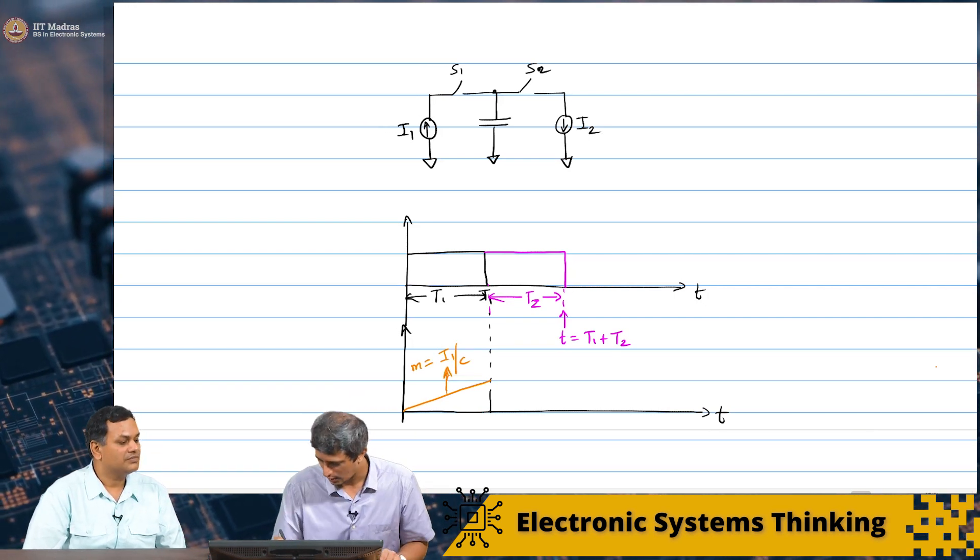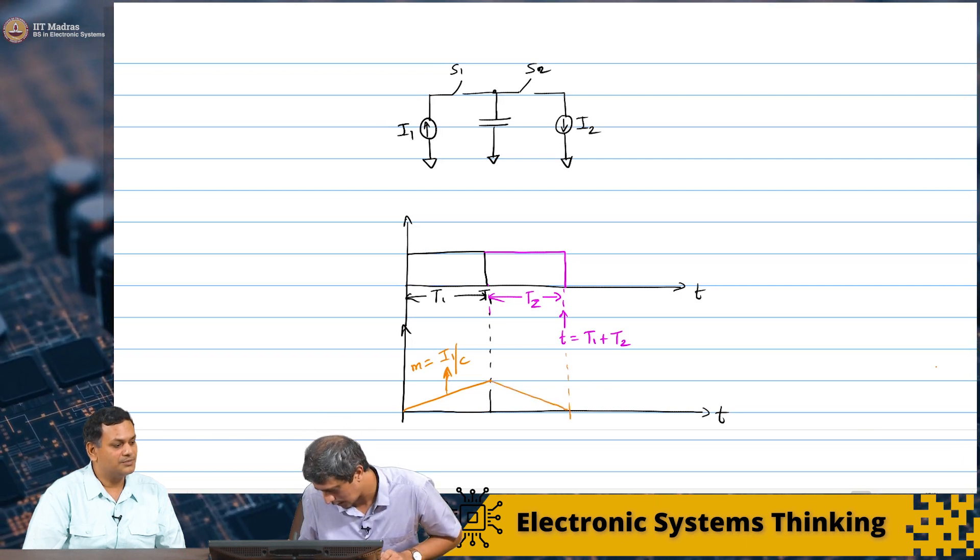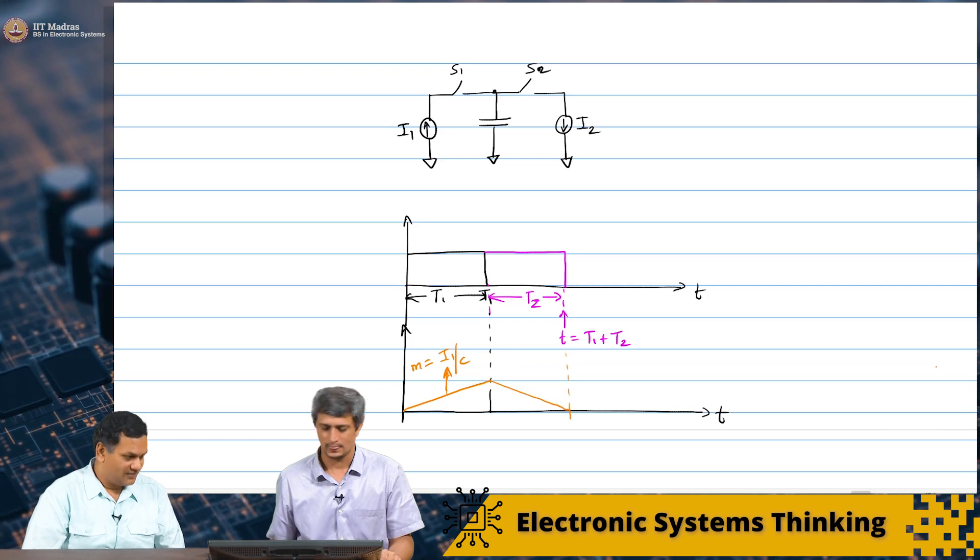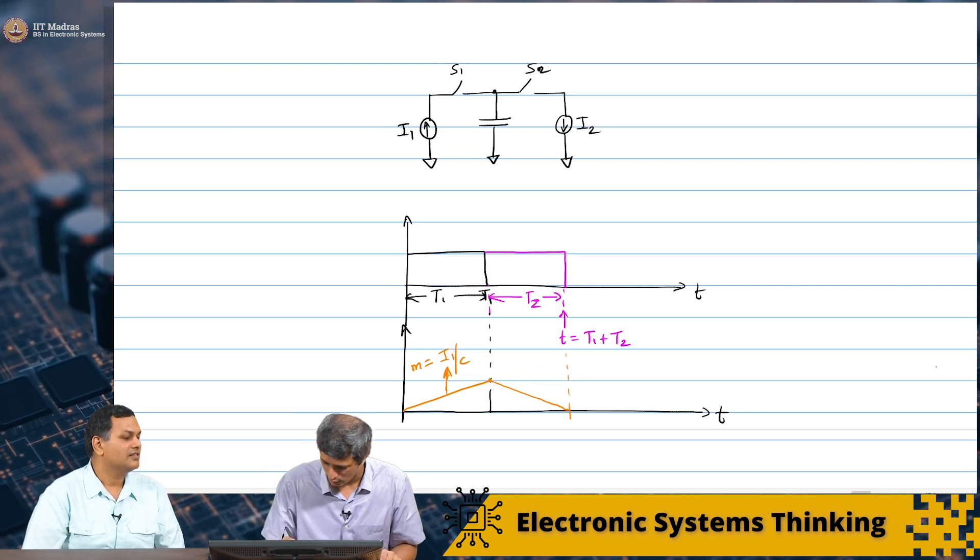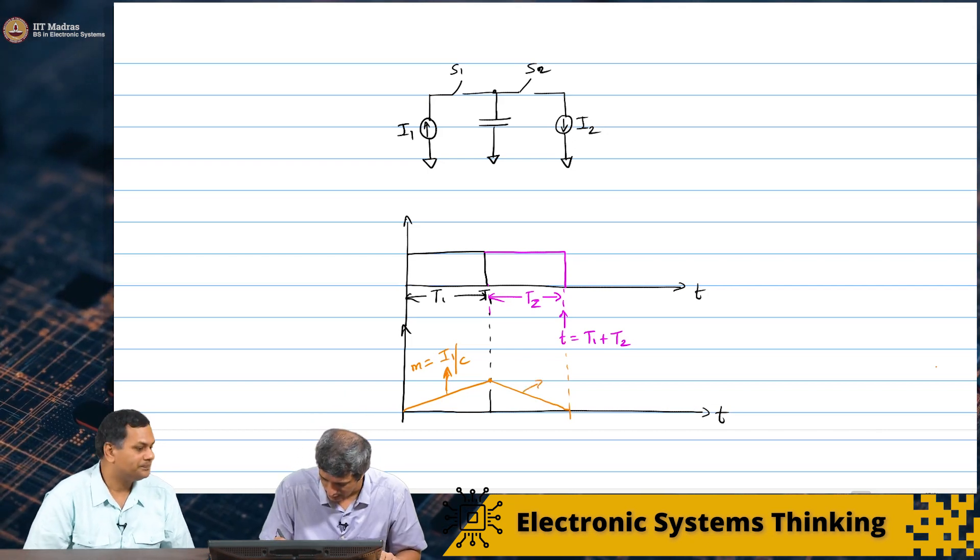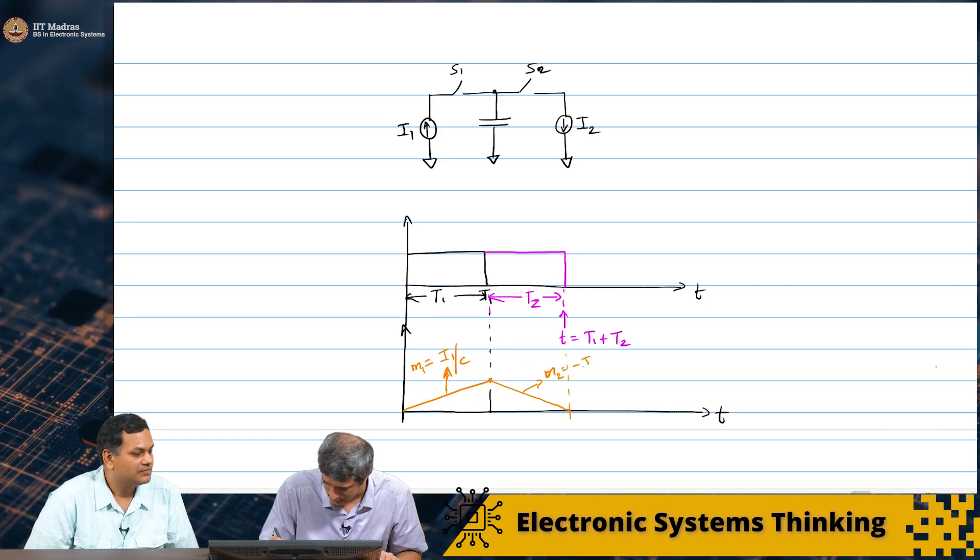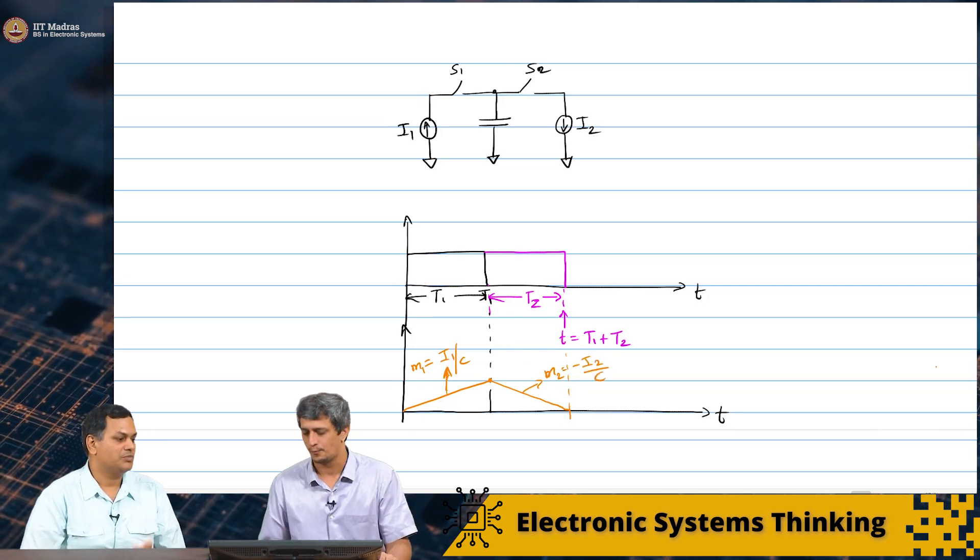Now, from here, we want this guy to discharge and come back down to zero. Therefore, we have to figure out what is it. And that slope is minus I2 by C. This slope is, I call it M1, M2. Minus I2 by C. Perfect.